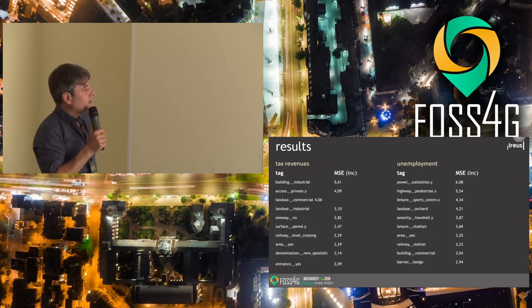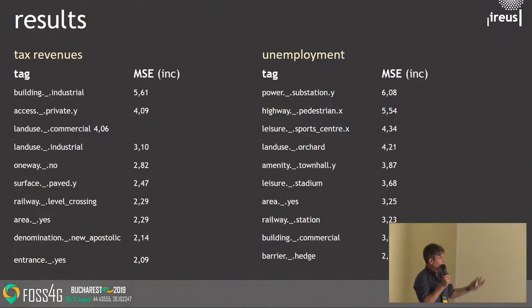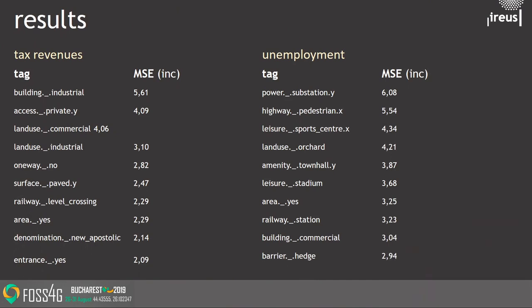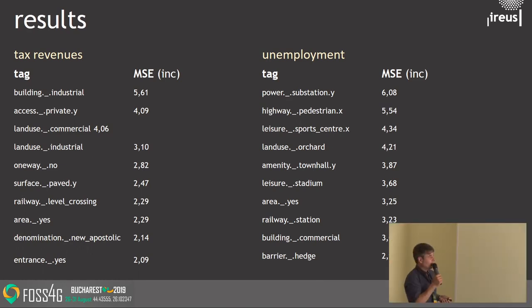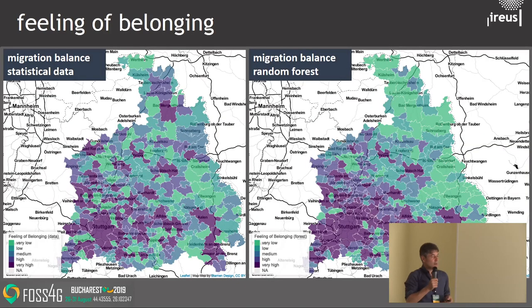If we look at tax revenues, it's very clear: industrial buildings, private access, land use industrial — all have a high impact, as everyone would expect. But when you look at unemployment, the situation is completely different. What has an orchid to do with unemployment, you might ask. We didn't yet fully understand what the reasons behind these apparently logical connections are.